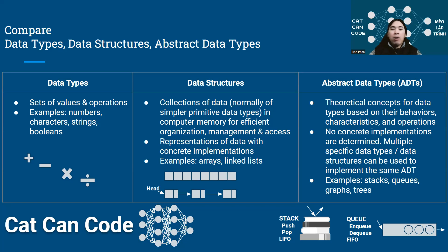When we talk about data types, these are normally being referred to as primitive data types like integers, floating point numbers, strings, and booleans. For example, the integers may indicate that the potential values are 0, 1, 2, 3, 4, 5, and so on and so forth.